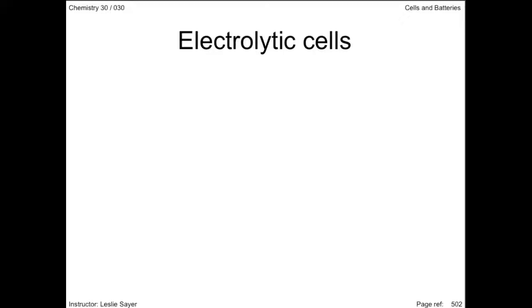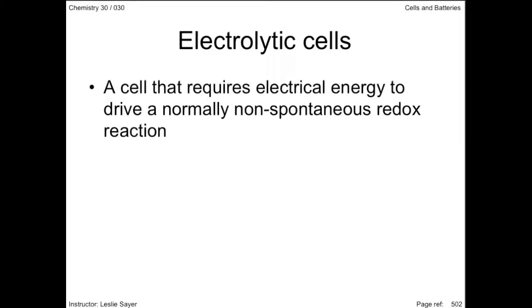In fact, while voltaic cells produce electrical energy as the reaction proceeds, electrolytic cells require electrical energy to make it proceed. Electrolysis, the process that occurs in an electrolytic cell, converts electrical energy into chemical energy — the opposite of a voltaic cell.